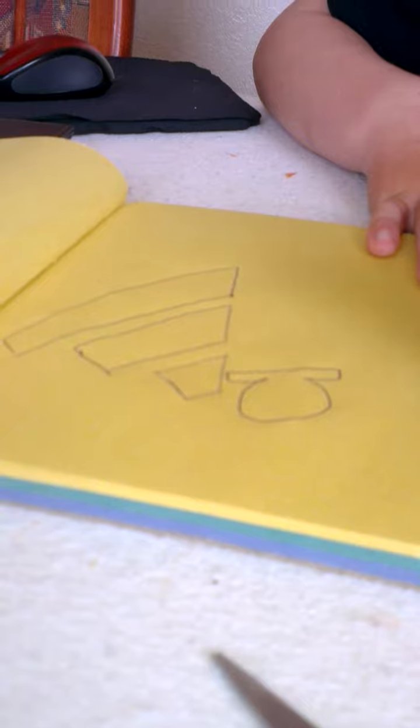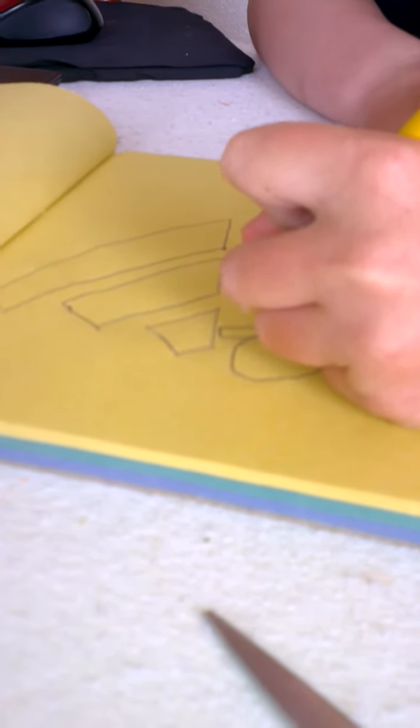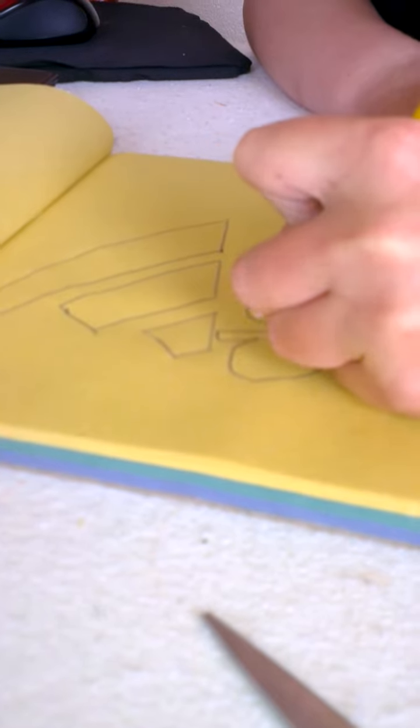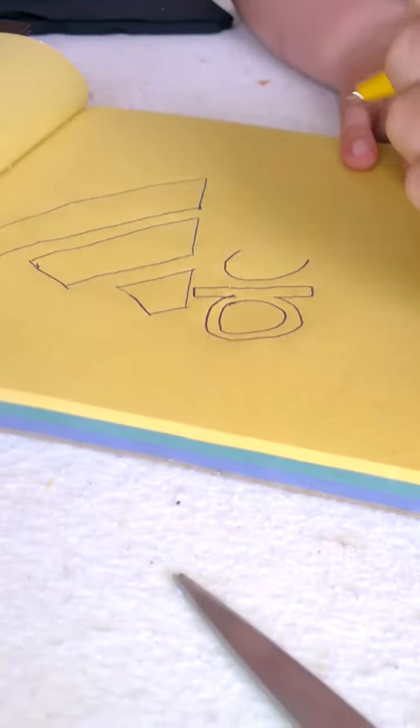I know that A looks like a D but it's not my fault. I told you I can't draw. We circle in the A. That makes it look a little bit like an A.